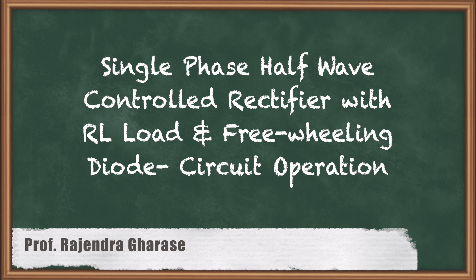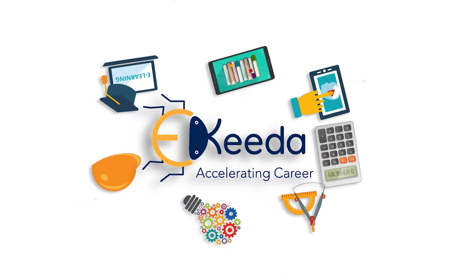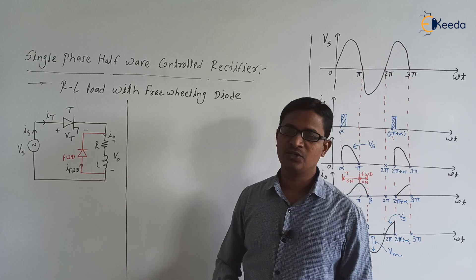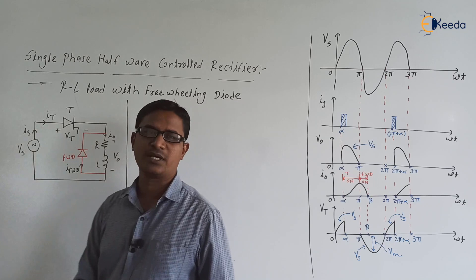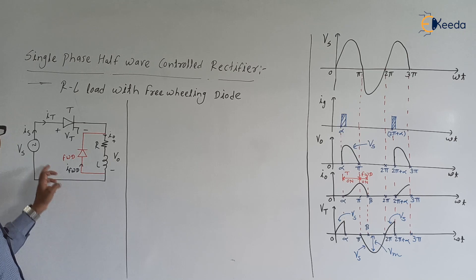Hello friends, in this video we are going to discuss a single-phase half-wave controlled rectifier with RL load and with freewheeling diode. The circuit diagram is the same as that of the RL load, but the only addition is one diode connected across the RL branch, that is the load branch.